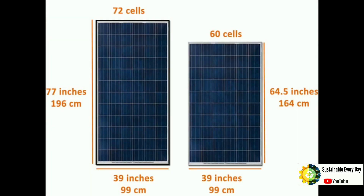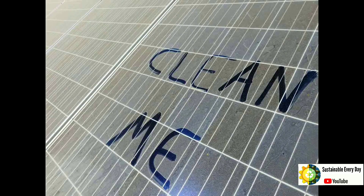To calculate the module area of the plant: if you have one module with 72 cells, the breadth of the PV module would be 99 centimeters, or roughly 1 meter, and the length would be 1.96 meters. So one module's breadth is approximately 1 meter and its length is 1.96 meters.